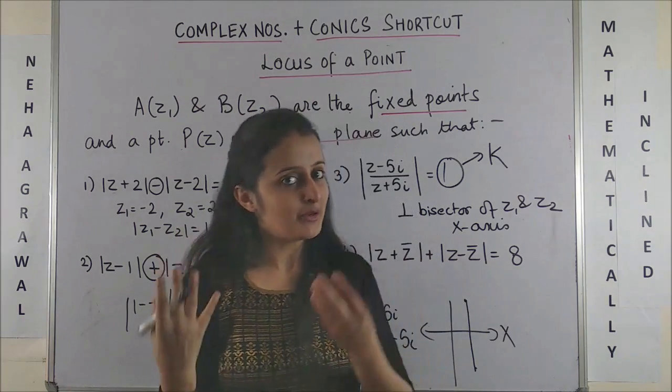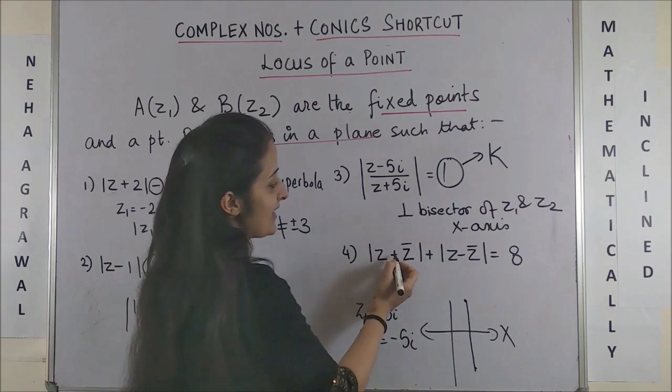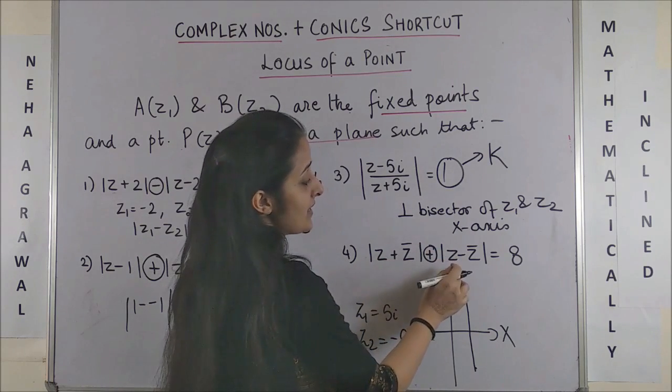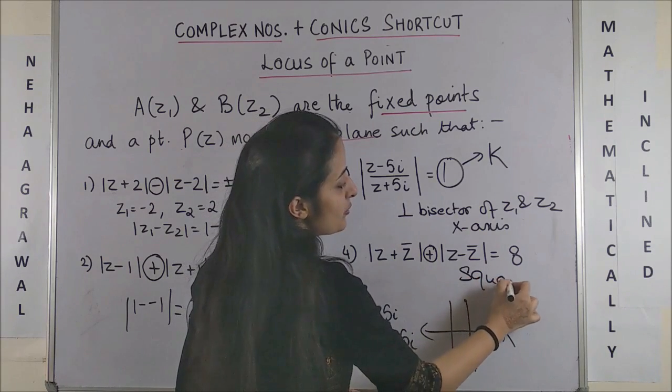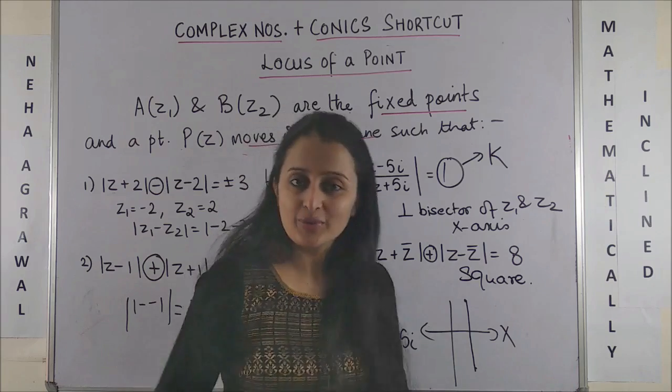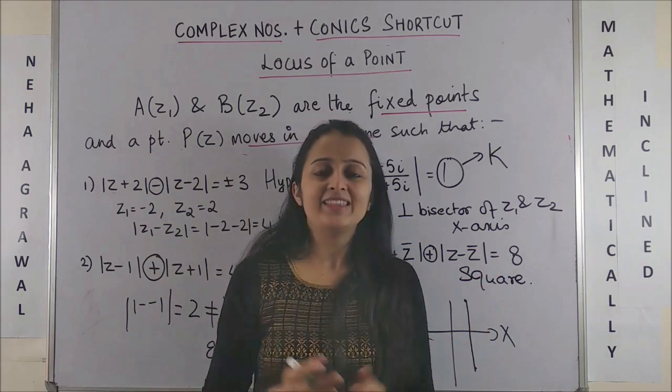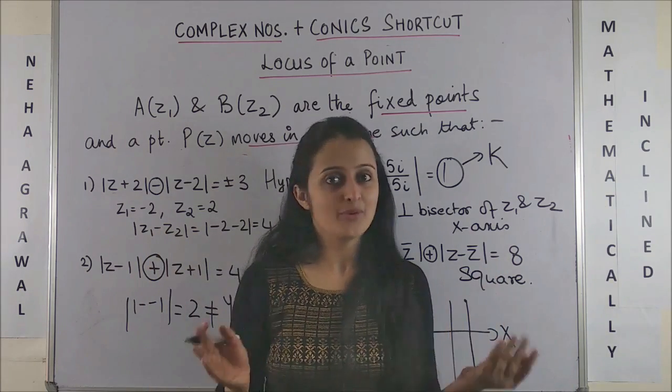And last but not the least, our special case is |z+z̄| + |z-z̄| = 8. Simply, your answer is that the locus would lie on a square. Have a look and then we continue with more and more questions.